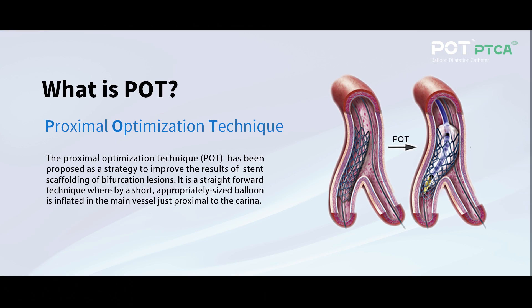What is POT? The proximal optimization technique, POT, has been proposed as a strategy to improve the results of stent scaffolding of bifurcation lesions. It is a straightforward technique whereby a short, appropriately sized balloon is inflated in the main vessel just proximal to the carina.